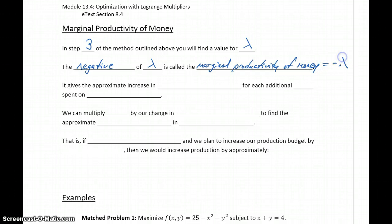That's always going to be equal to the opposite of whatever we come up with for lambda. If we come up with a negative value for lambda, marginal productivity of money is positive. If we come up with a positive value for lambda, the marginal productivity ends up being negative.